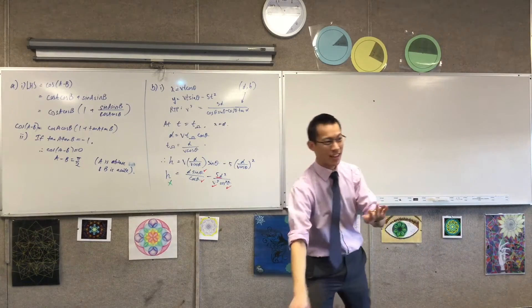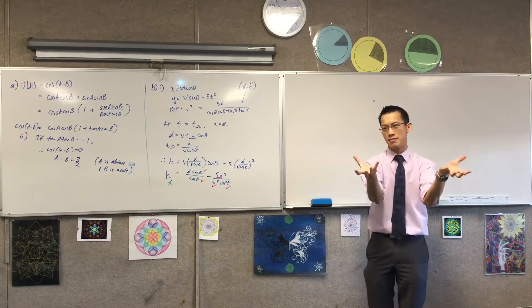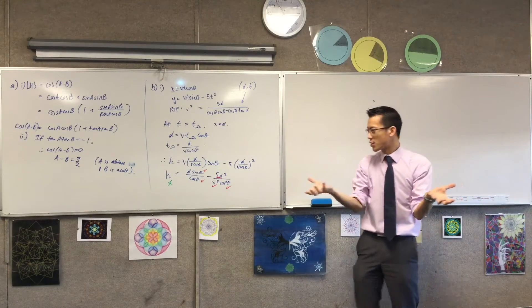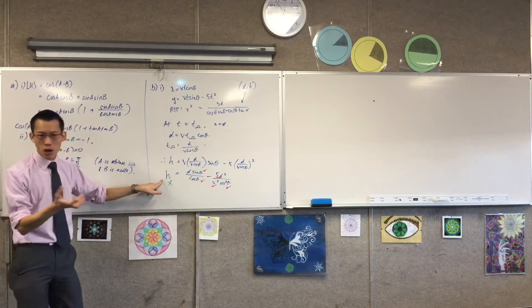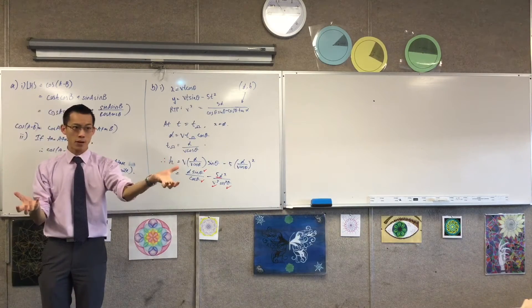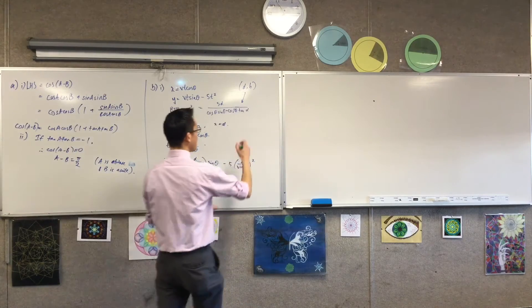So when you put these two pieces of information together, what you're missing and this extra thing that you've got together, clearly, this can't be a coincidence. So you think, well, what's the relationship? What's the relationship between the thing you've got and the thing you're trying to get? Tan alpha. H equals D tan alpha. Very good.